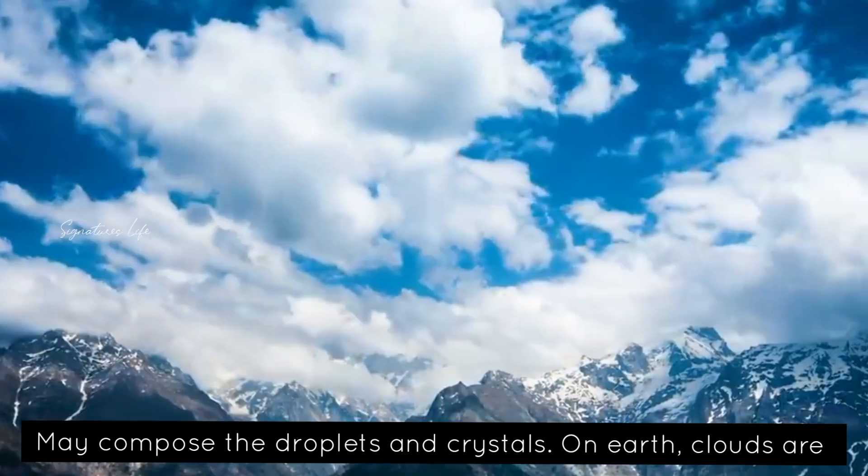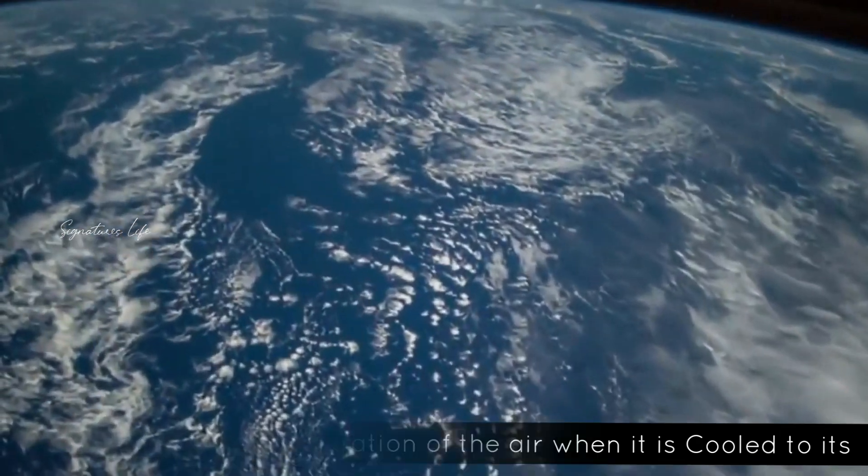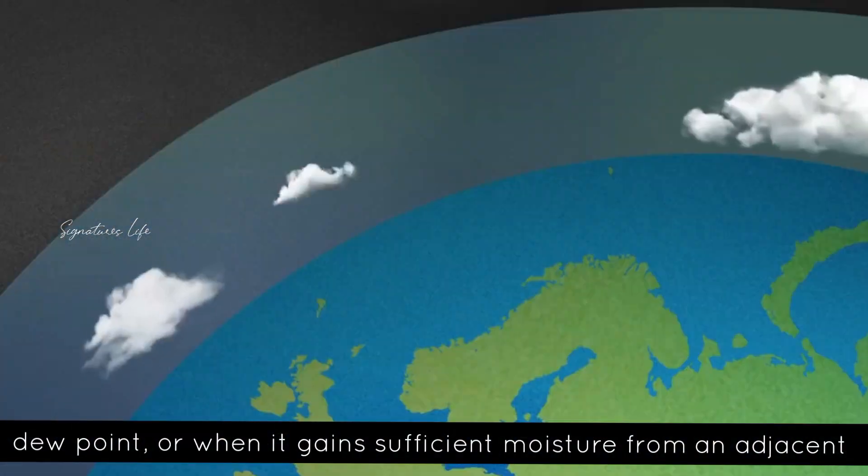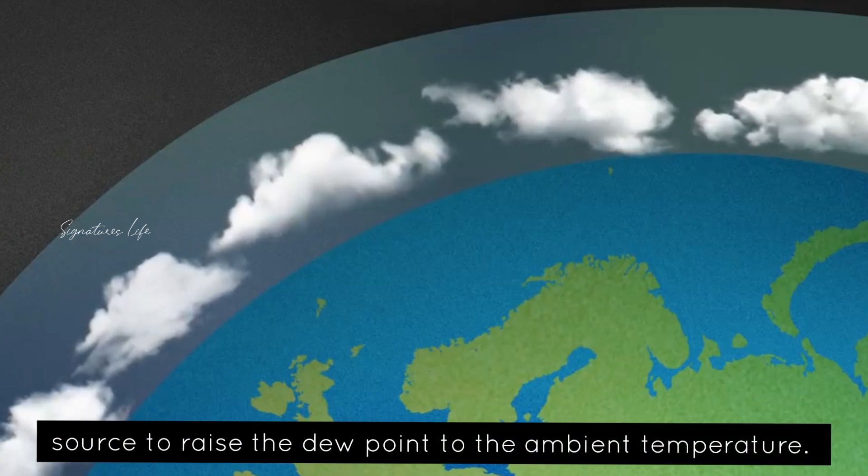On Earth, clouds are formed as a result of saturation of the air when it is cooled to its dew point, or when it gains sufficient moisture from an adjacent source to raise the dew point to the ambient temperature.